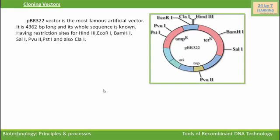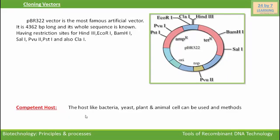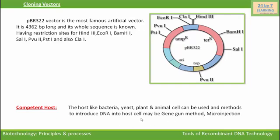We are now jumping to the third and last tool of recombinant DNA technology: the competent host. The host — such as bacteria, yeast, plant, and animal cells — can be used, and methods to introduce DNA into the host cell may be the gene gun method, microinjection, or electroporation. These were the three important tools of recombinant DNA technology.